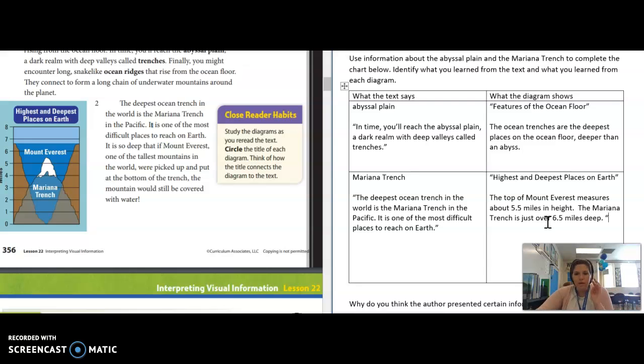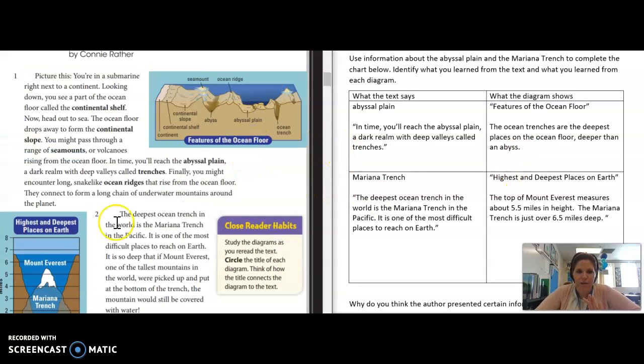That's what I learned from this visual. It's additional information. It did help me understand what they were saying in the text about if you put Mount Everest down into the trench, how it would still be covered with water. But the additional information that I got were the measurements. I think that was the purpose of this diagram, to help you understand the putting the mountain down in the trench part, but also more specifically just how tall Mount Everest is in comparison to how deep the Mariana Trench is.